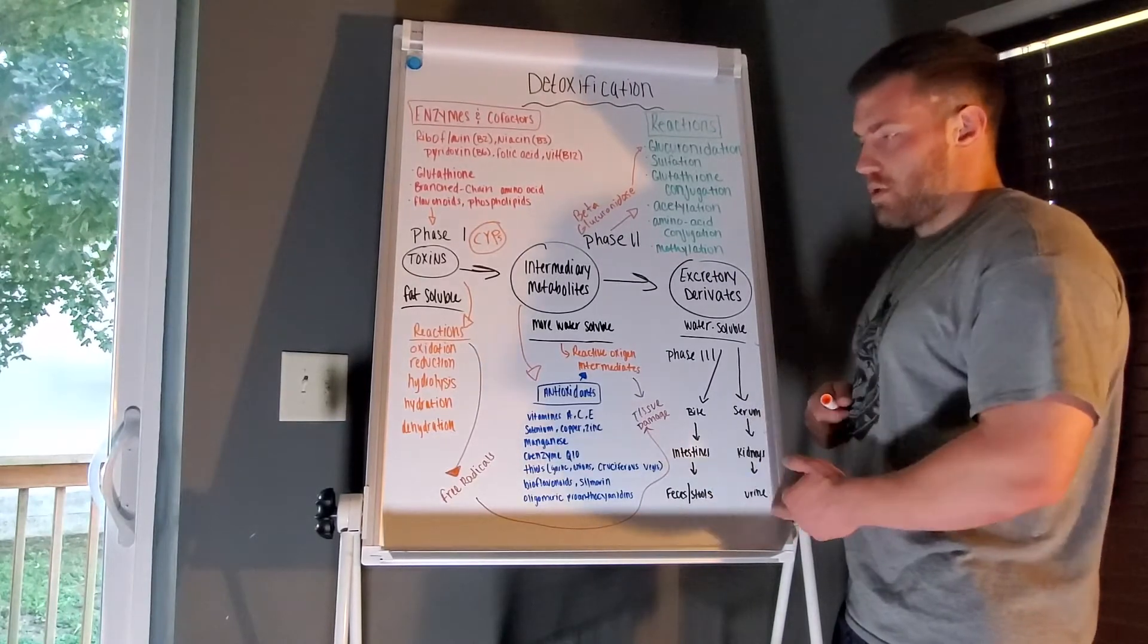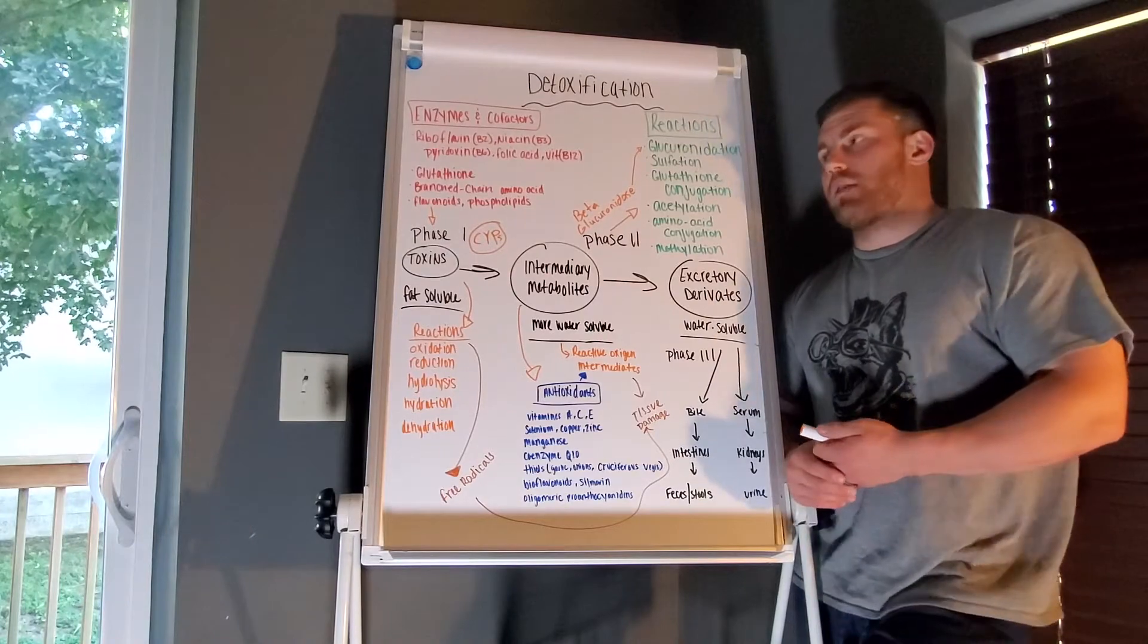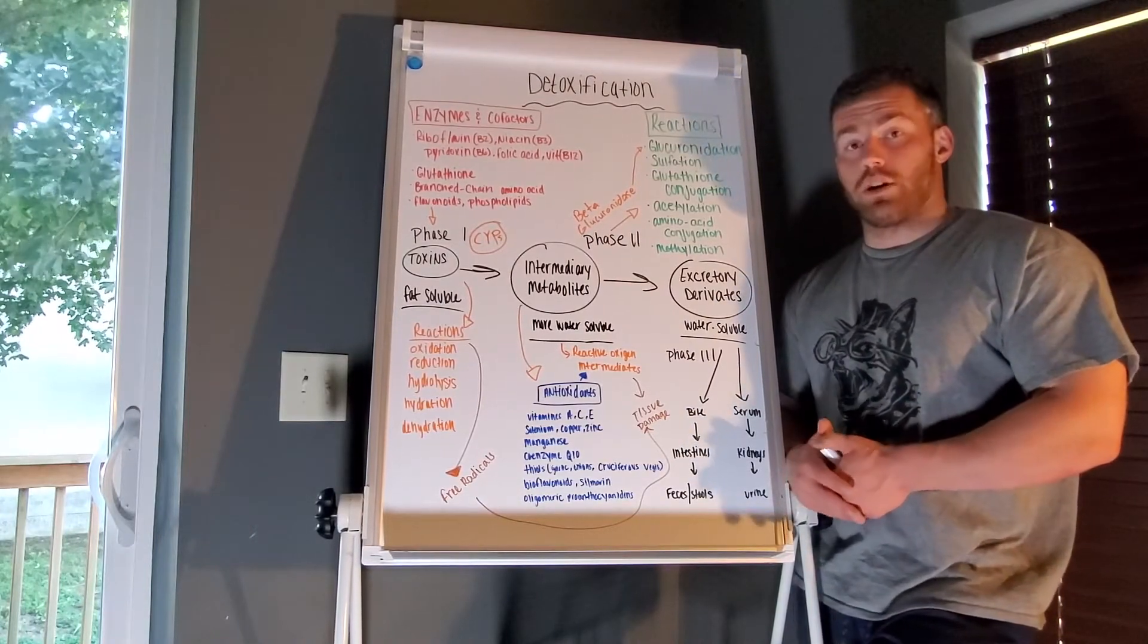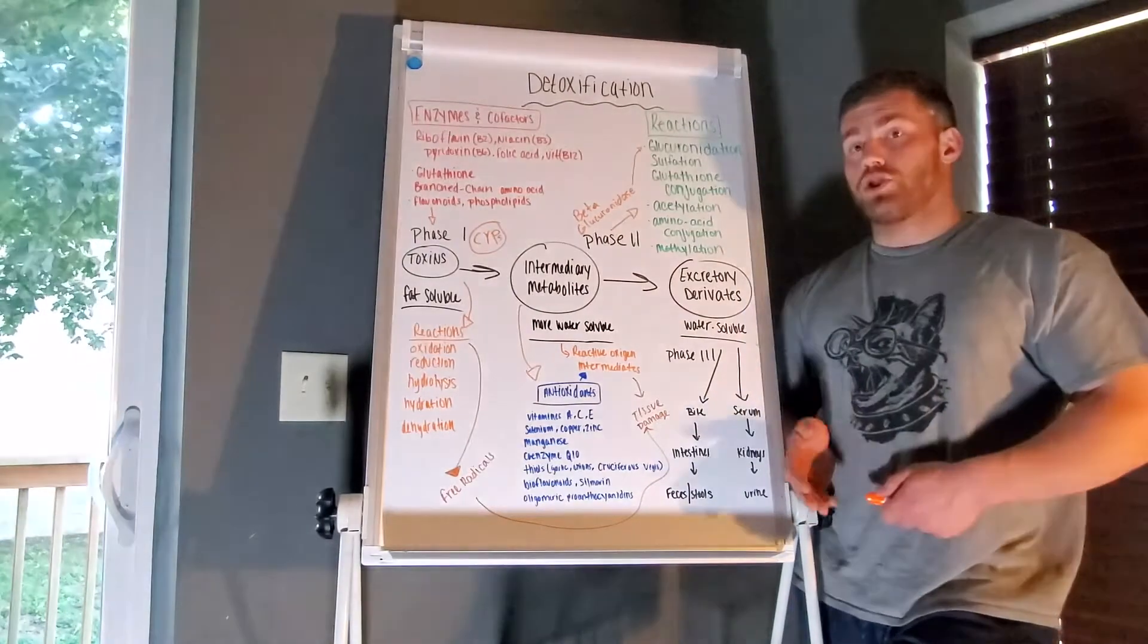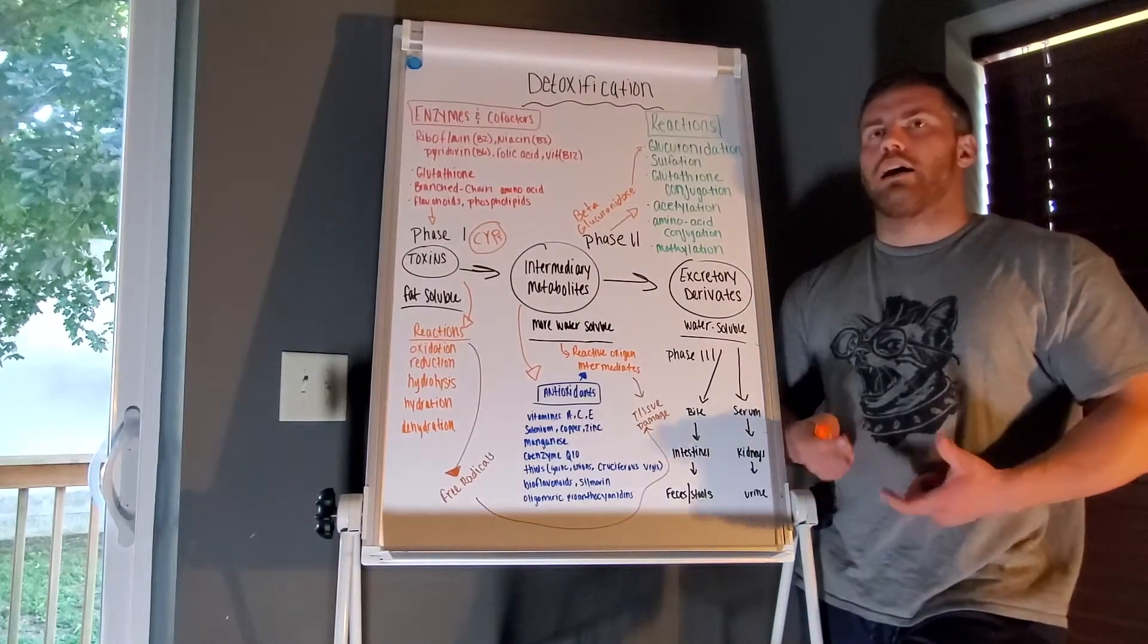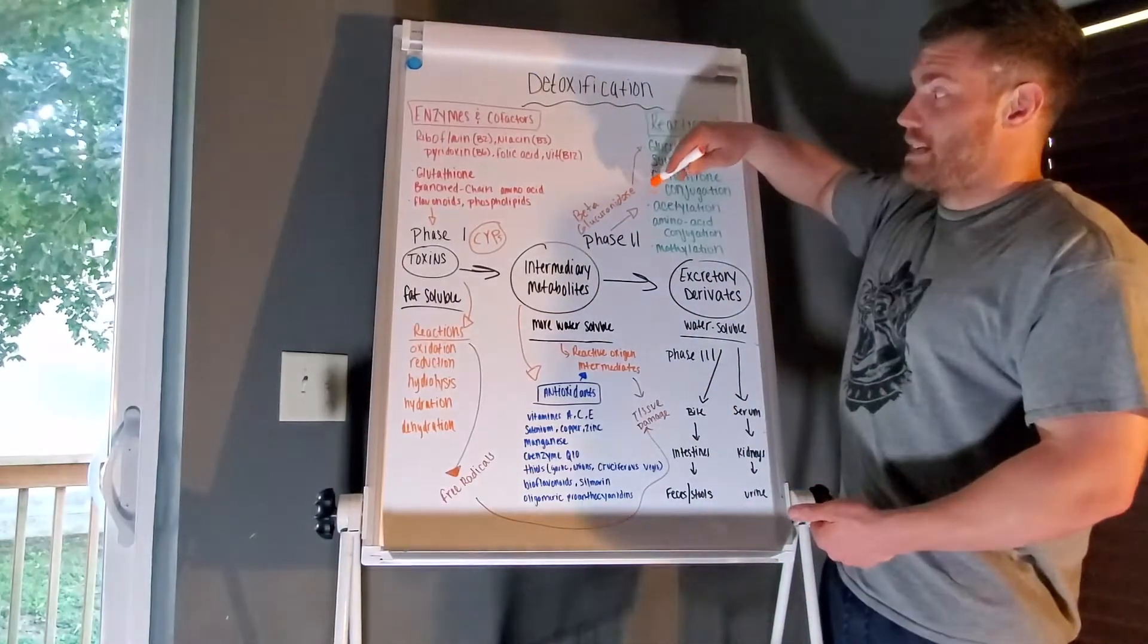This is why we use certain testing methods with stool and urine tests to see certain things. For example, our GI-MAP will show us microbiome or gut flora. It also shows other things that are secreted in the stool. Beta-glucuronidase is on that test, pathogens, viruses, parasites, and all that stuff.